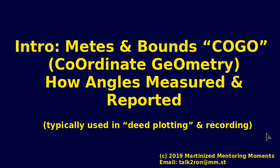Greetings everyone and welcome to another Martinized Mentoring Moment. One of the questions that comes up off and on is COGO, or coordinate geometry, sometimes also called course over ground orientation. It shows up in metes and bounds, typically used in deed plotting and deed recording. So we're going to take away some of the mysteries of how the angles are collected, used, and essentially reported.